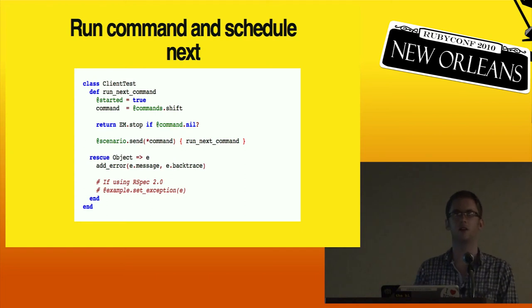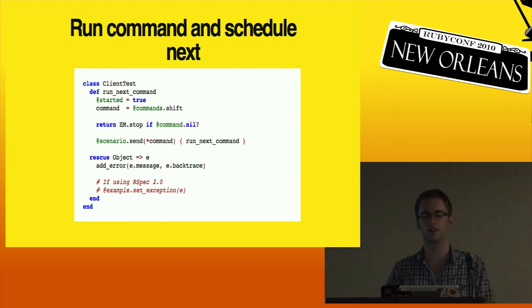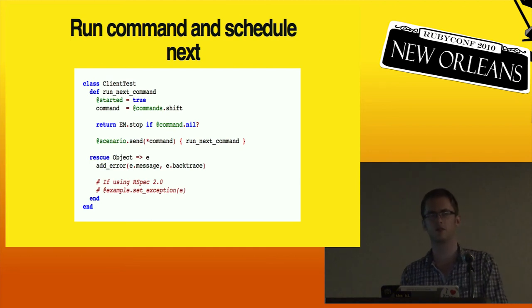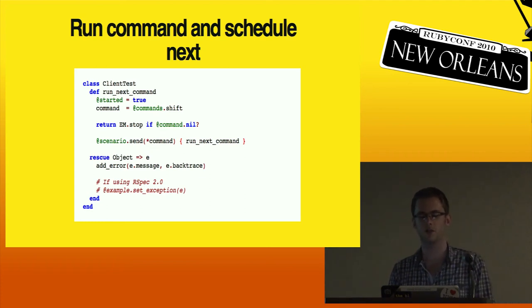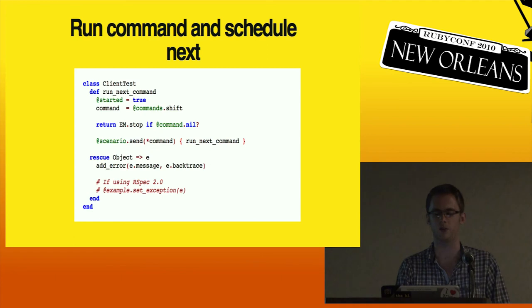Otherwise we take the command and send it to our async scenario object, tacking on this callback. All the callback does is call run_next_command - it's just this tiny bit of glue that takes all the work you want to do and sequences it even though it's all asynchronous. You'll also want to catch exceptions. Exceptions don't work that well with asynchronous stuff because as soon as you defer some work for later, you've gone into a different call stack. But you can catch them - in Test::Unit you call add_error, and if you're using RSpec you can call example.set_exception. That will show up in the error output if your test fails.